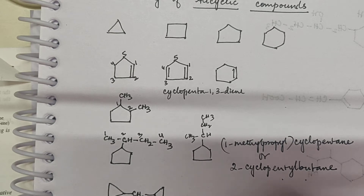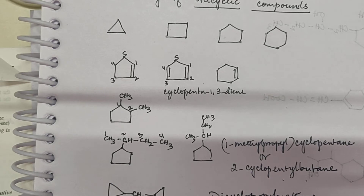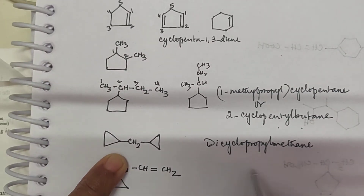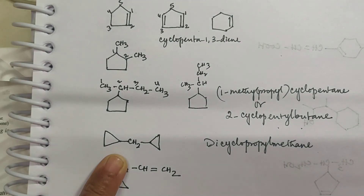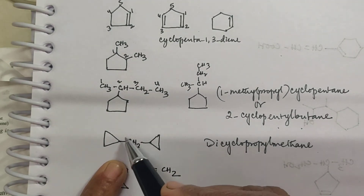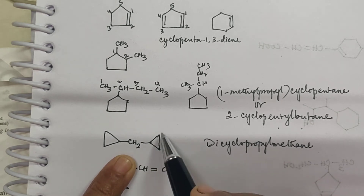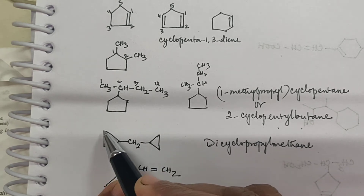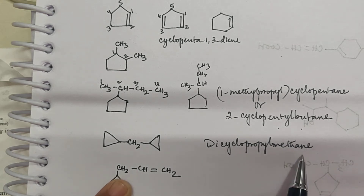This is called dicyclopropylmethane. It is so because this is considered as CH₄, where one hydrogen is replaced by one cyclopropyl group and another hydrogen is replaced by another cyclopropyl group. So you call it dicyclopropylmethane.